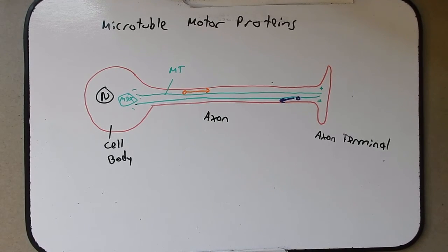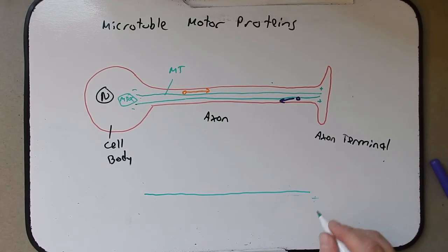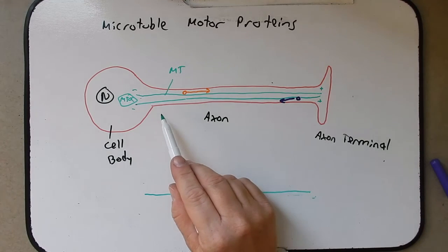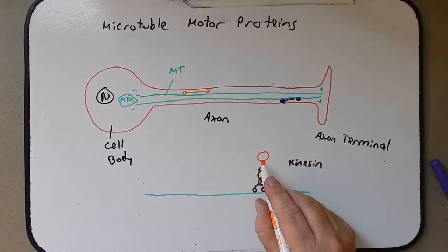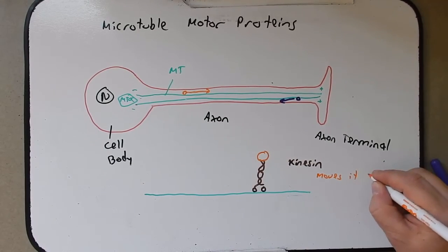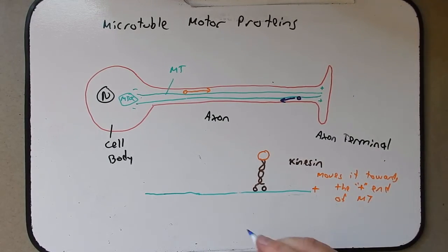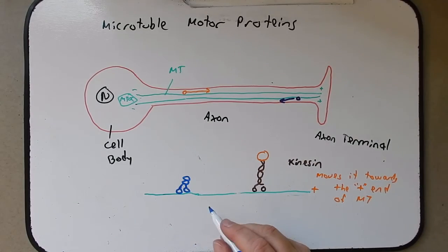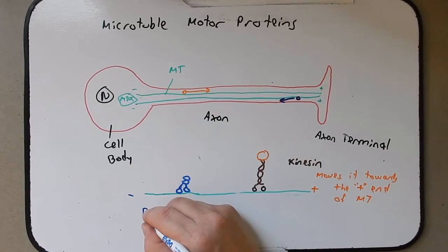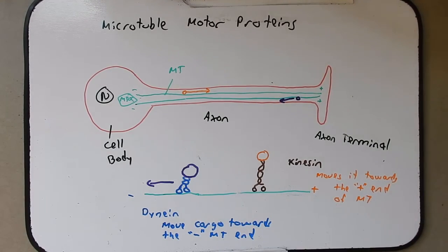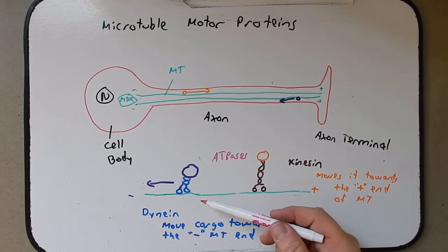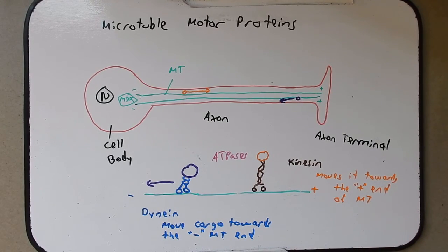There must be a mechanism for transport toward the positive end and transport toward the negative end, achieved by specialized motor proteins. The first motor protein is kinesin — it grabs cargo and moves it toward the positive end of the microtubule. The other motor protein, structurally similar but moving in the opposite direction, is dynein — dynein motors move cargo toward the negative microtubule end. Both of these are ATPases; hydrolyzing ATP is what allows these motor proteins to move cargo in one direction or the other. That's all for this podcast — if you have any questions please let me know, and I'll see you in class.